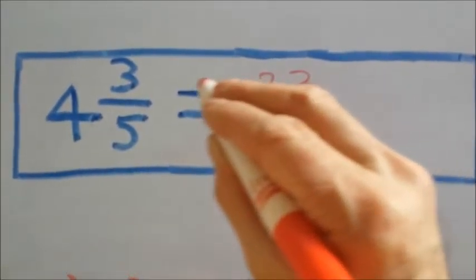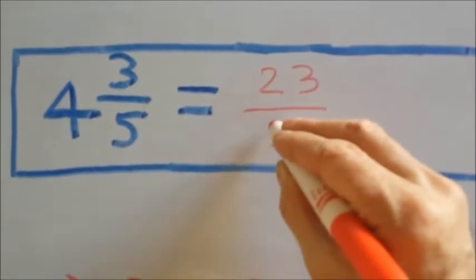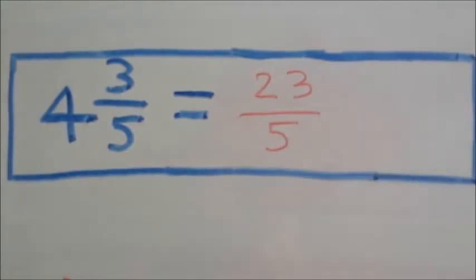Next, we just move our denominator of 5 over to an improper fraction for a final answer of 23 fifths.